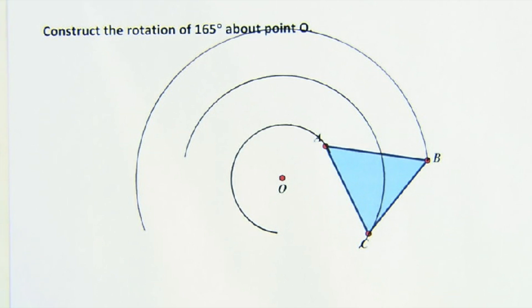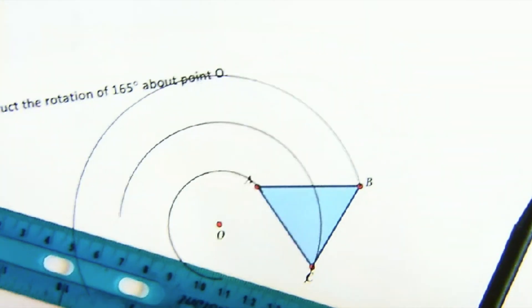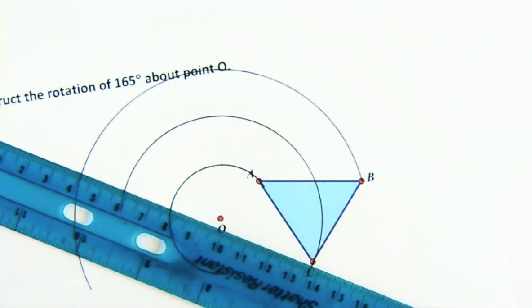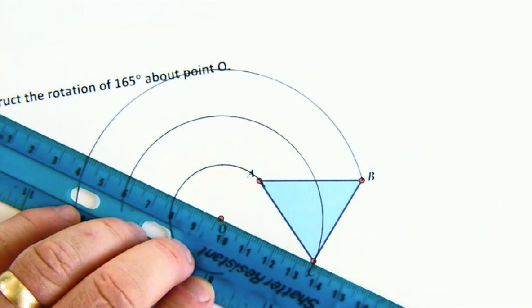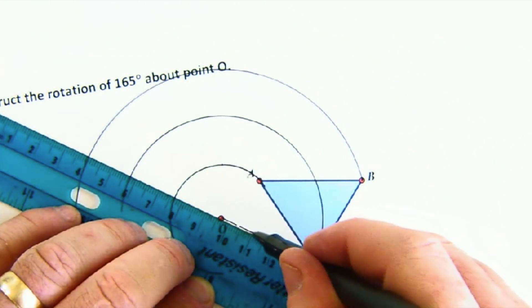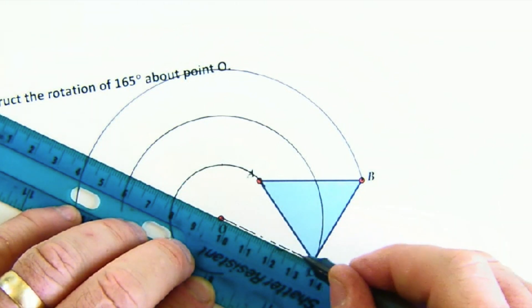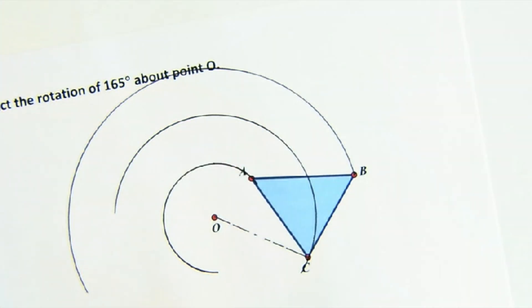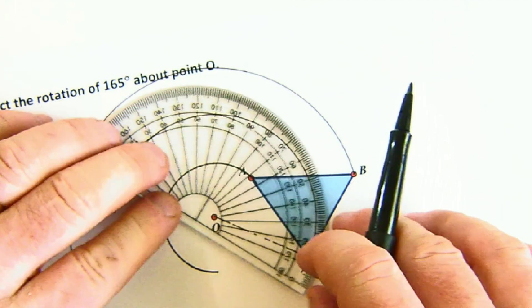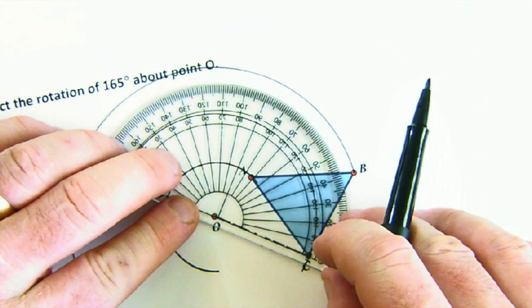Now the next thing is to create the rotation of 165. So to do that we're going to create an angle. So what I'm going to do is I'm going to create kind of an imaginary one side of my angle, O to C. And now I want to rotate that 165 degrees. So I'm going to put down my protractor.